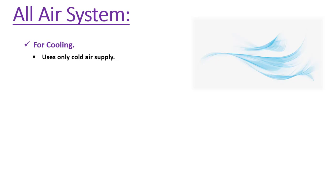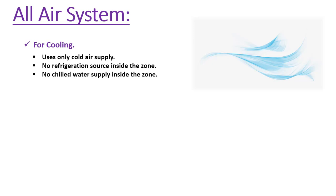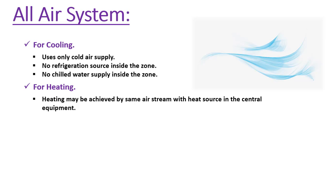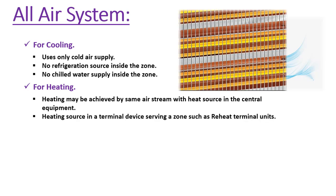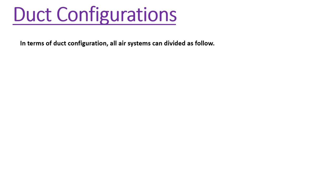All air systems provide cooling solely through cold supply air delivered to the conditioned space. These systems don't provide any supplementary cooling by refrigeration source within the zone or supply any chilled water to the zones. In all air systems, heating may be achieved by the same air stream with a heat source in the central equipment like an AHU, or heating can also be achieved by a heating source in a terminal device serving a zone, such as reheat terminal units.